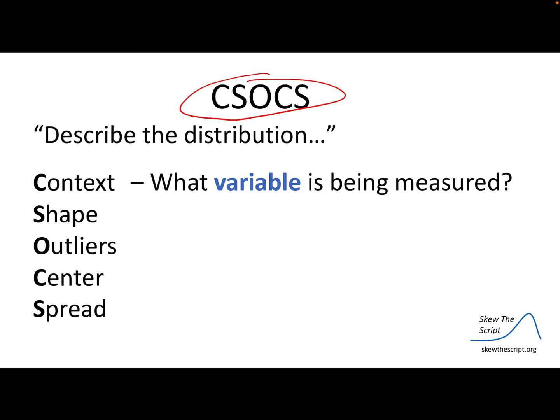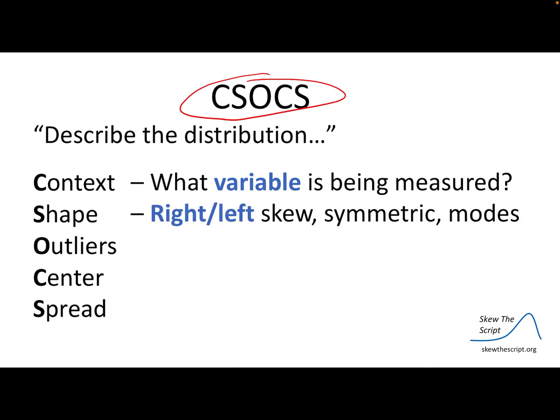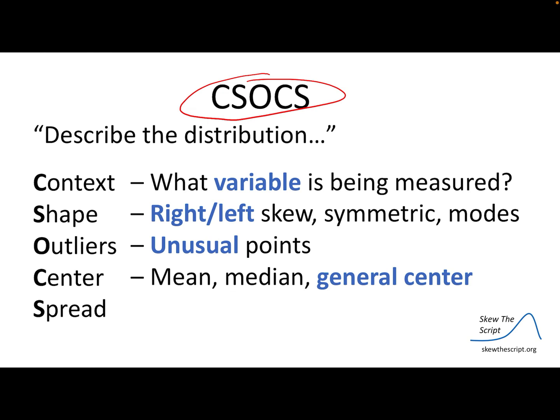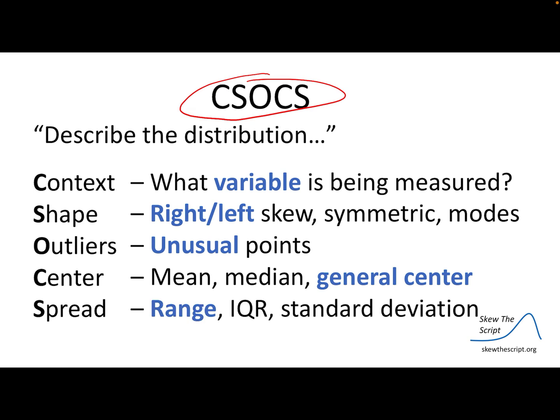The context is what variable is being measured — what is the graph or the data about? For the shape, you're describing what it looks like: is there a skew, is it symmetric, and what is the mode? For the outliers, you're describing if there were any unusual points in your data. The center is where the middle of your data lies, and it would include the mean, the median, and a general description. Finally, the spread is your range, your IQR, and your standard deviation — this represents how spread out the data is, or the variability in the data.